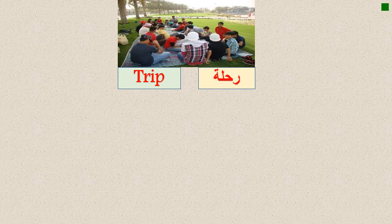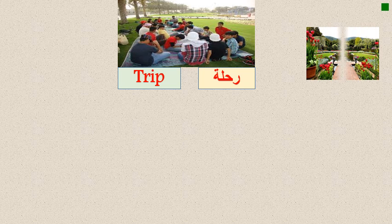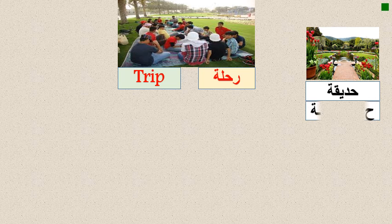The first word you must know is رحلة, meaning 'trip.' How to write حديقة? It is spelled: ص, dal, yaq, khaw, ta'marboota - حديقة.